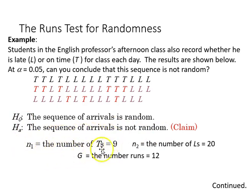N1 is the number of on times. In this case, it's 9. For sample 2, the number of lates is going to be 20, and the sequence number of runs is 12.